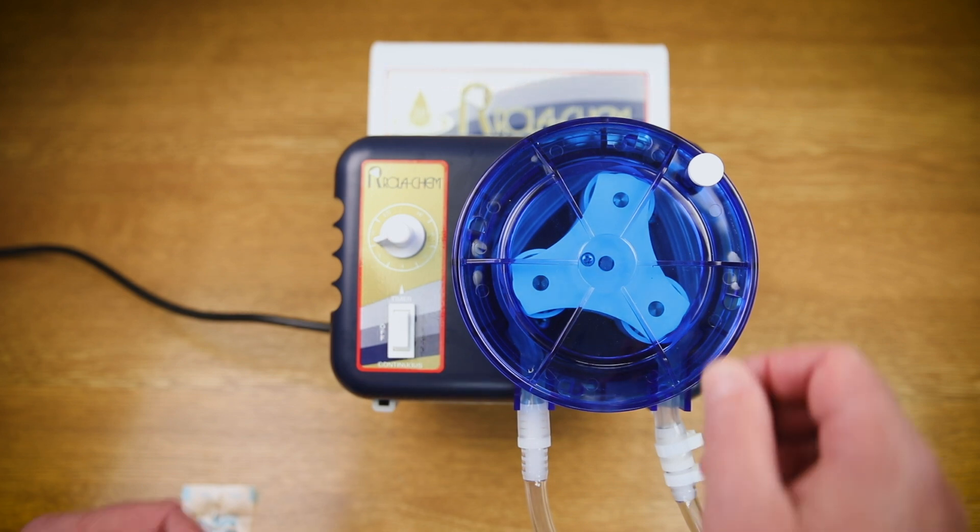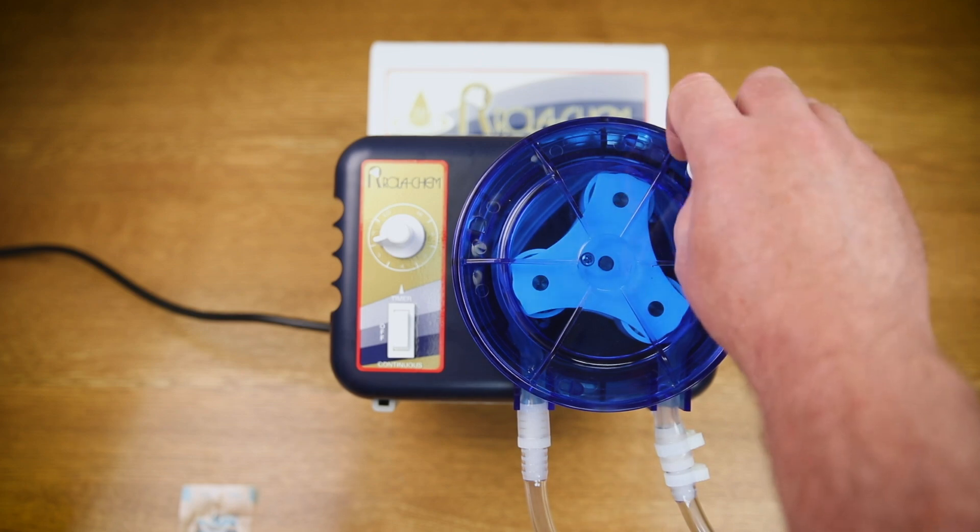To remove the cover, there's a white thumb screw at one o'clock. Unscrew that counter clockwise and remove.